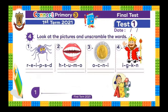Exercise number four. Look at the pictures and unscramble the words. Look at picture number one — try to rearrange these letters. S-P-I-D-E-R. Spider. Excellent.